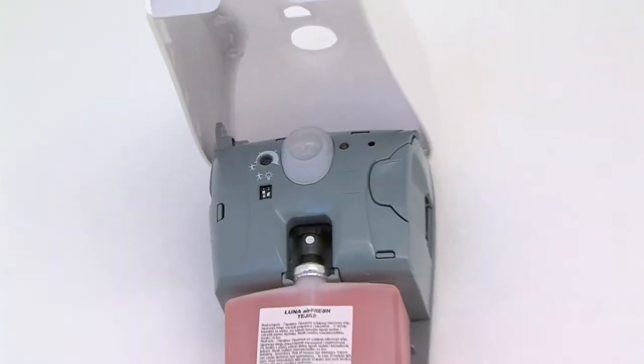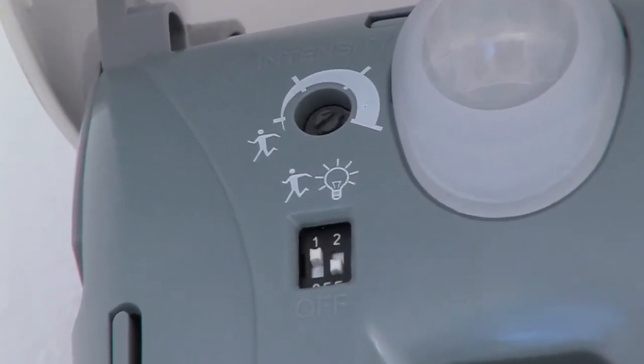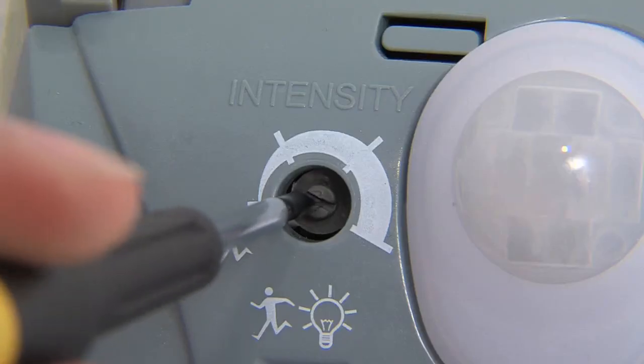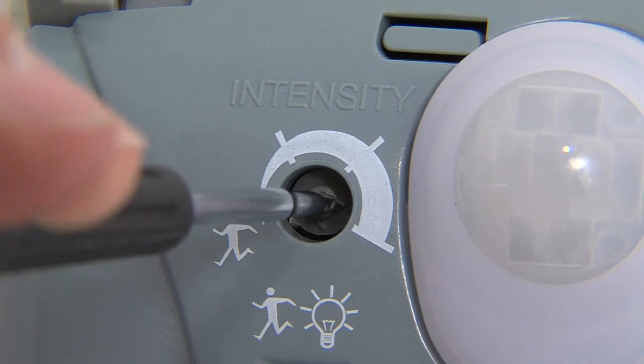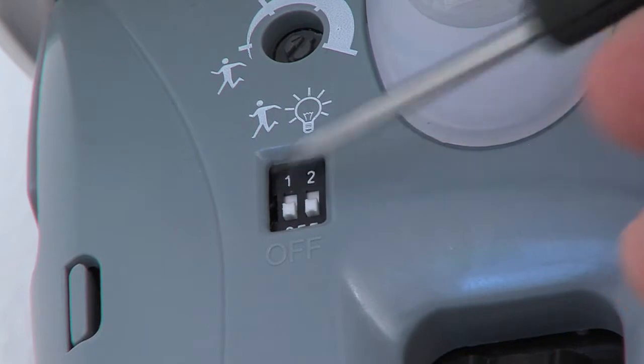The diverse but simple setting options of the Xebu Sense Fresh Air are very impressive. The fragrance dispensing intervals can be infinitely adjusted from between 60 to 5 minutes via the intensity regulator. Just below the intensity regulator are two switches.